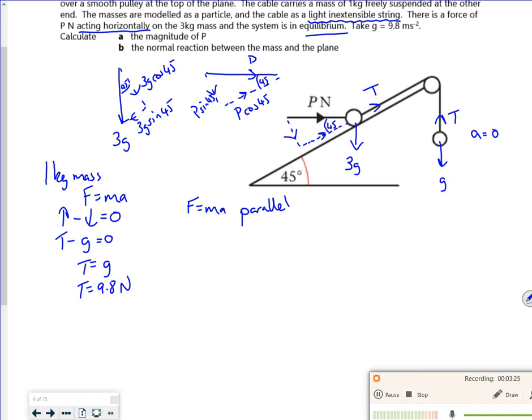So parallel would say that going that way, going up minus going down is equal to zero, or vice versa, it doesn't matter. So the force pushing up would be the P cos 45. The force pushing down, because it's smooth, there's no friction or anything, the force pushing down is 3g sin 45.